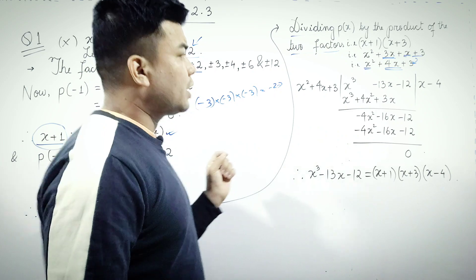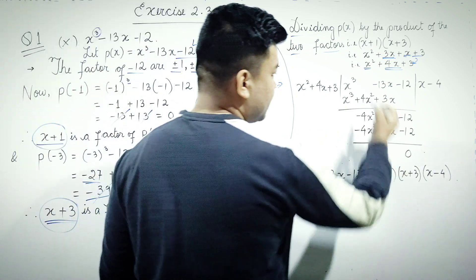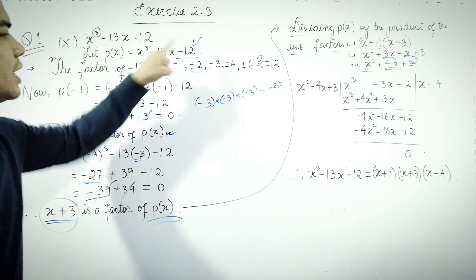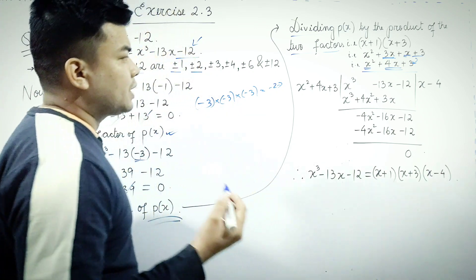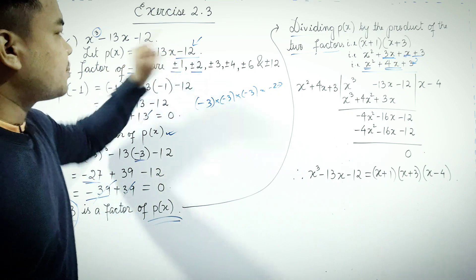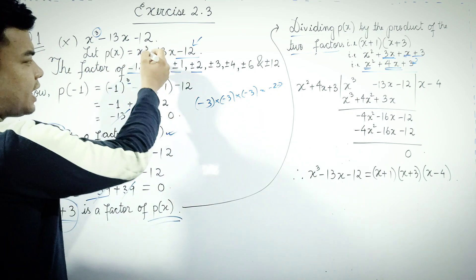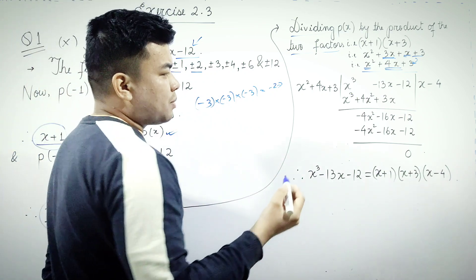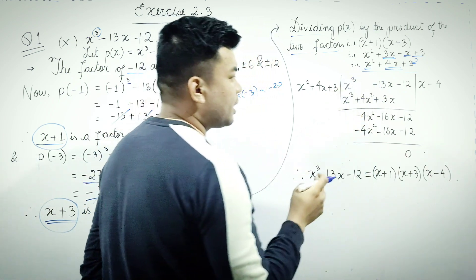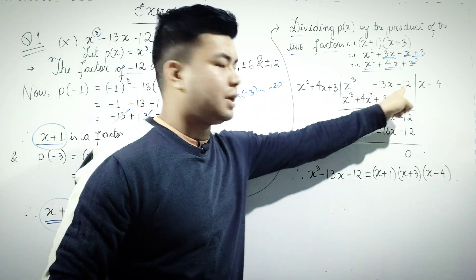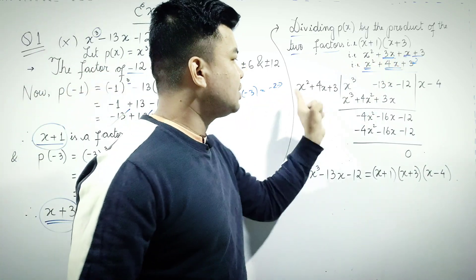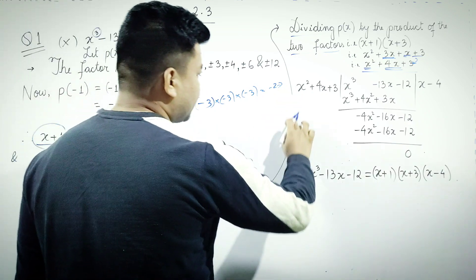We divide x cubed minus 13x minus 12 by x squared plus 4x plus 3. Let us set up the polynomial long division.